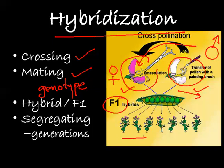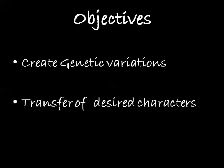The first progeny is called F1 hybrid. The progeny received from the F1 hybrids is then intercrossed and intermated between each other to create another progeny. This next progeny is called the segregating generation.